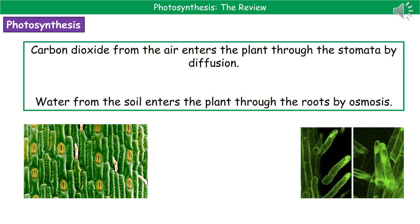The second reactant is water, which comes from the soil and enters the plant through the roots — or more specifically, the root hair cells, which increase the surface area. Water enters the plant through a process called osmosis. In the bottom right, you can see the microscope image of the actual root hair cells, the little bits sticking off the side of the roots.